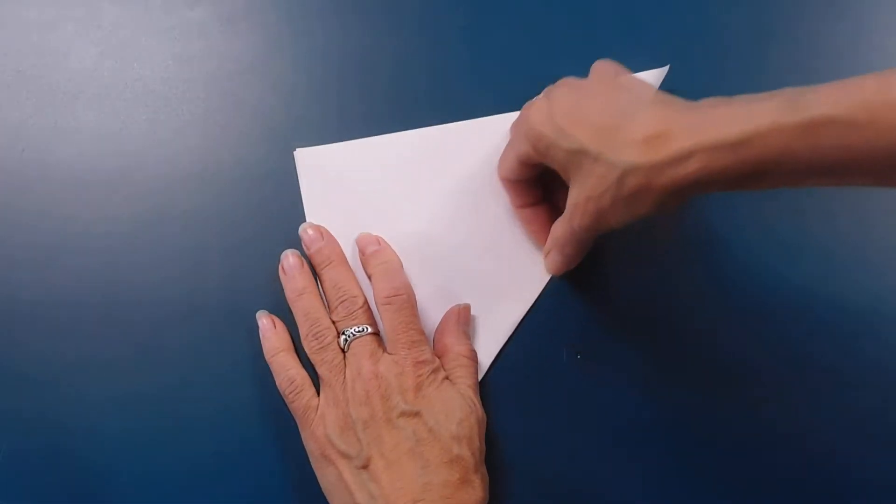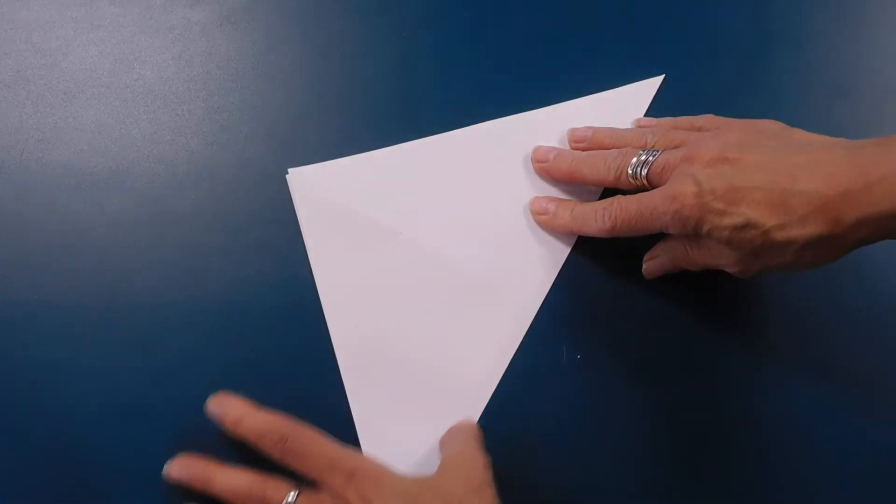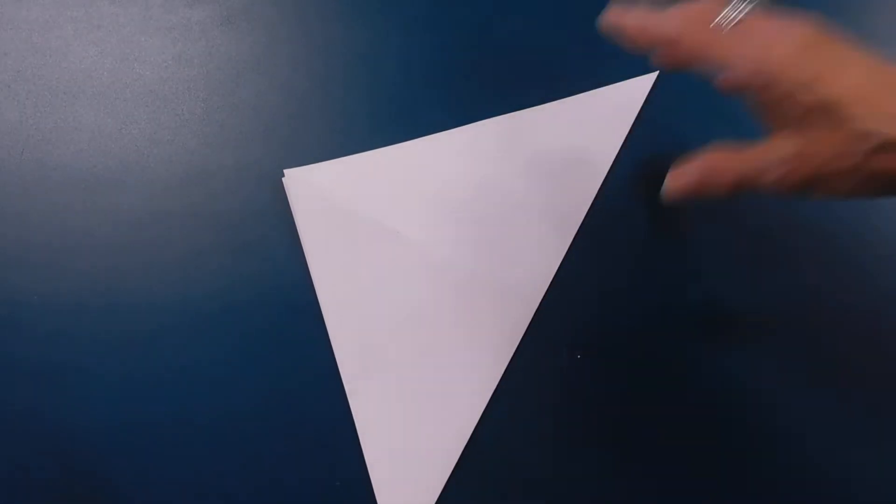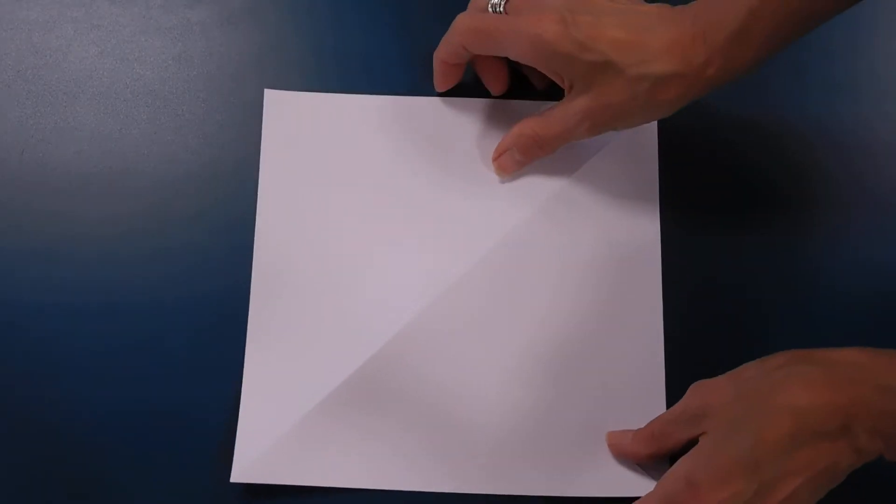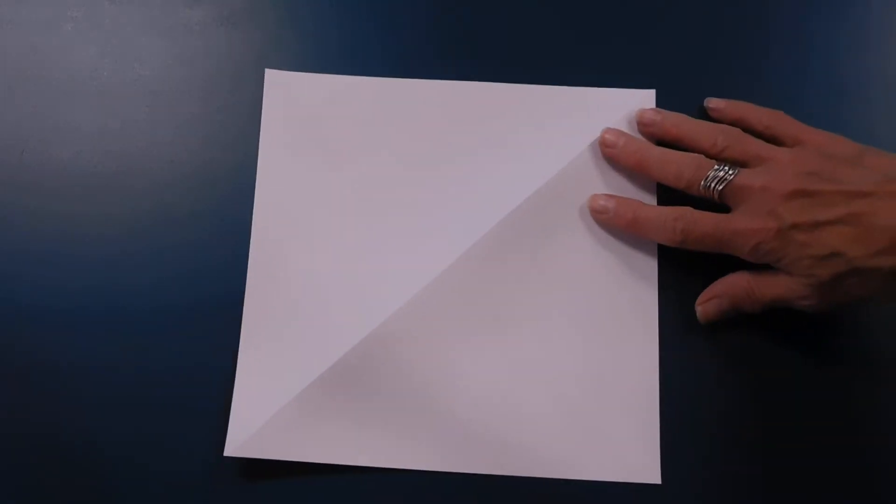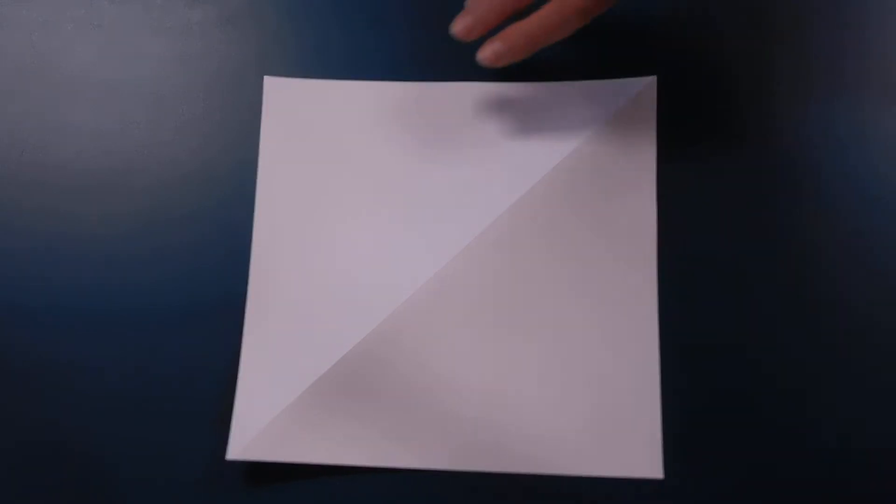So to crease it, you can use your fingernail, you can run your ruler along the edge of it. Now we're going to turn that over, and we're going to make a horizontal fold, and then a vertical fold.